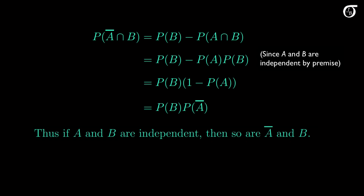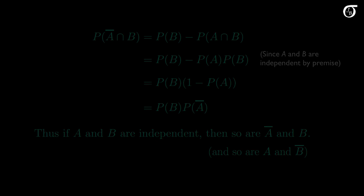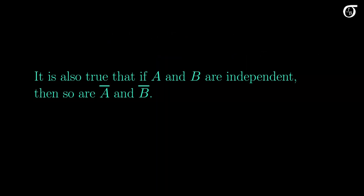We just showed that if A and B are independent, then so are A complement and B. And since our choice of which event we call A and which we call B is completely arbitrary, we could switch the roles of A and B, and say that A and B complement are independent as well. As a quick note to finish, it is also true that if A and B are independent, then so are their complements. We could show that by using the method we used here a second time, but I take a more direct approach to that proof in another video.